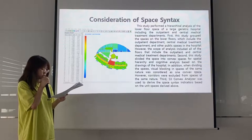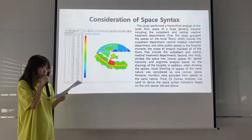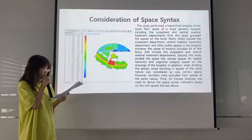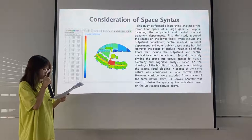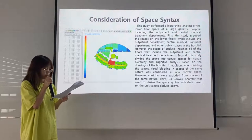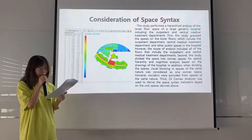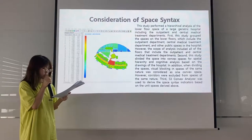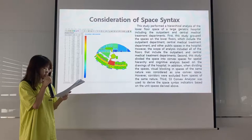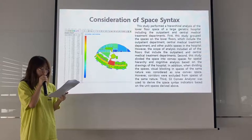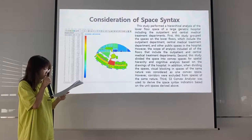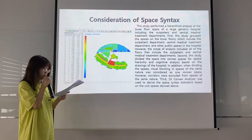This study performed a hierarchy and analysis of the lower-floor space of a large geriatric hospital, including the outpatient and Central Medical Departments. First, this study grouped the spaces on the lower floor, which include the outpatient department, Central Medical Treatment Department, and other public spaces in the hospital. The scope of the analysis includes all of the floors that include the outpatient and Central Medical Treatment Department.